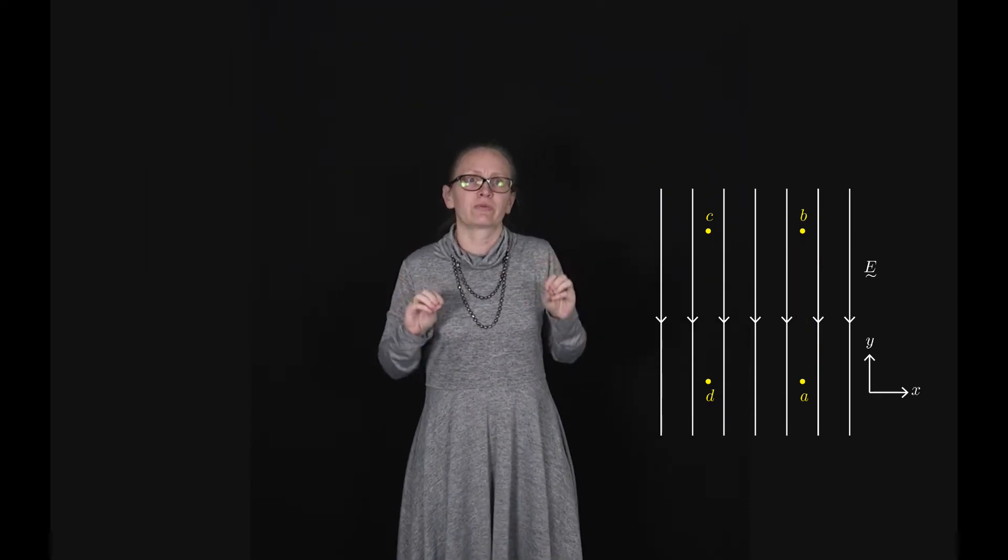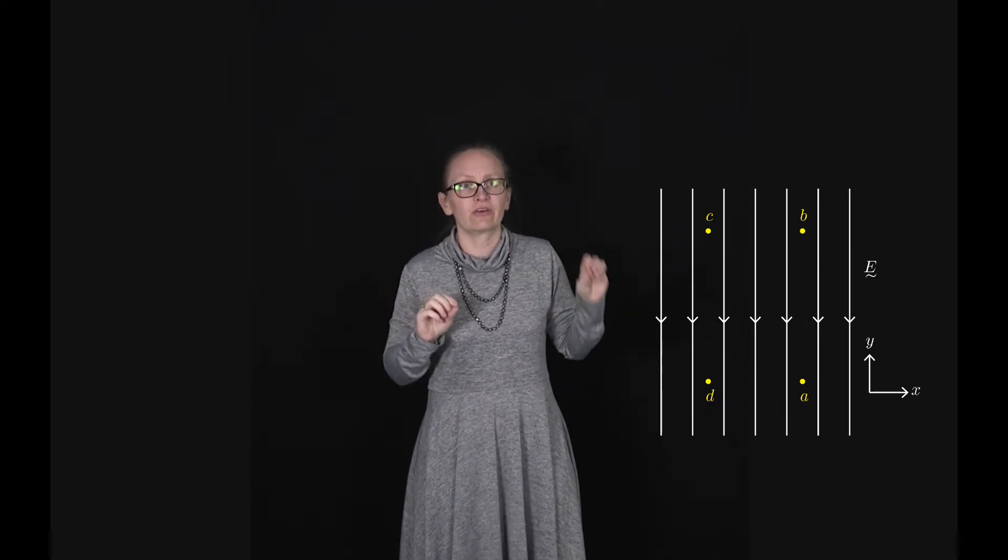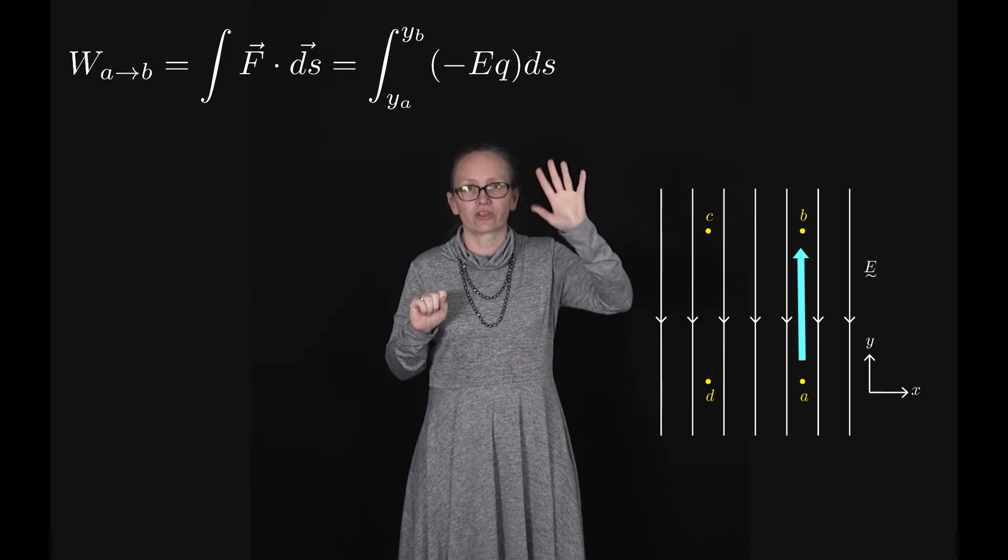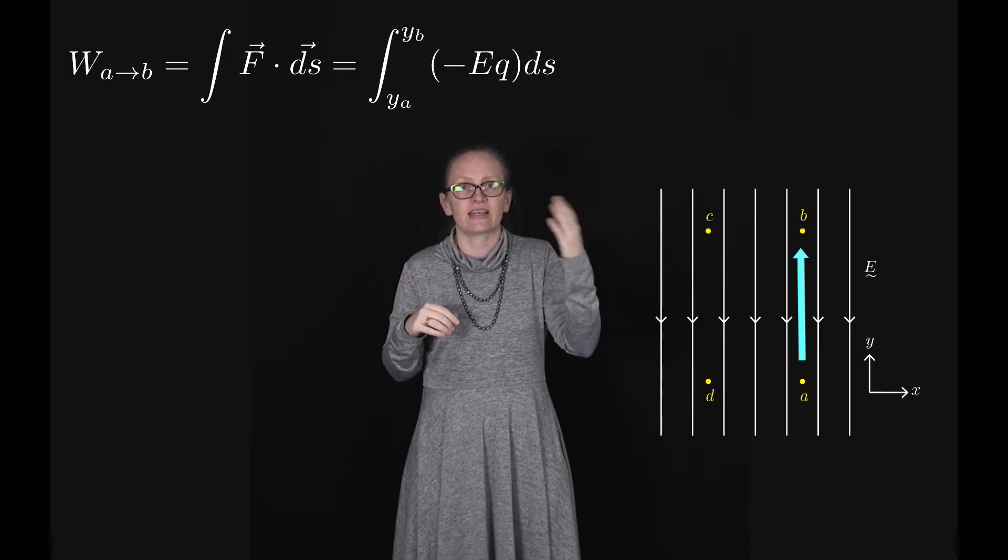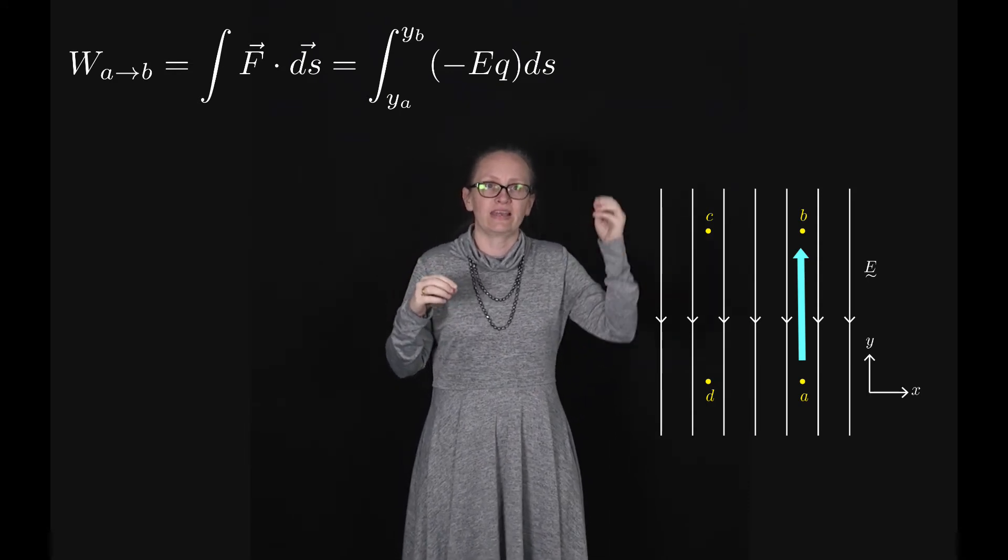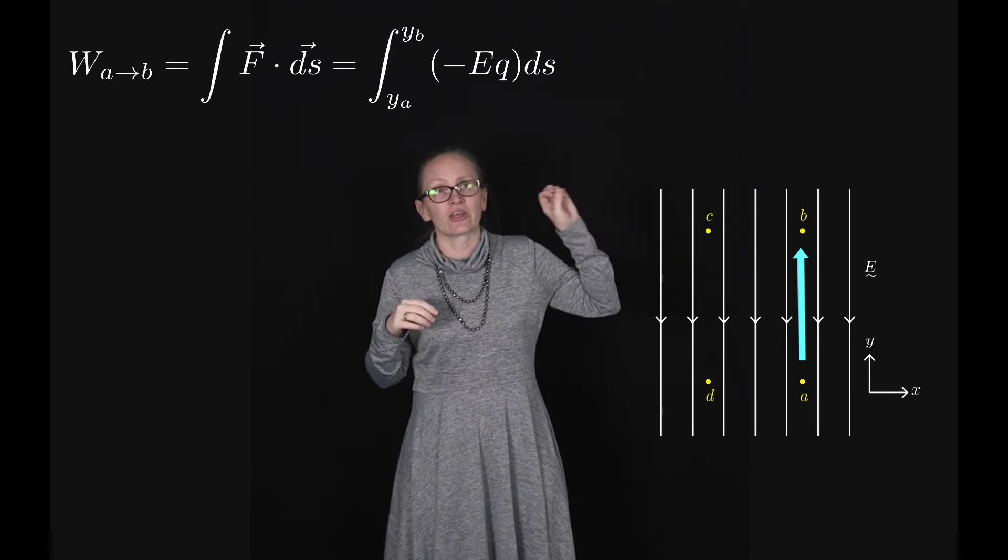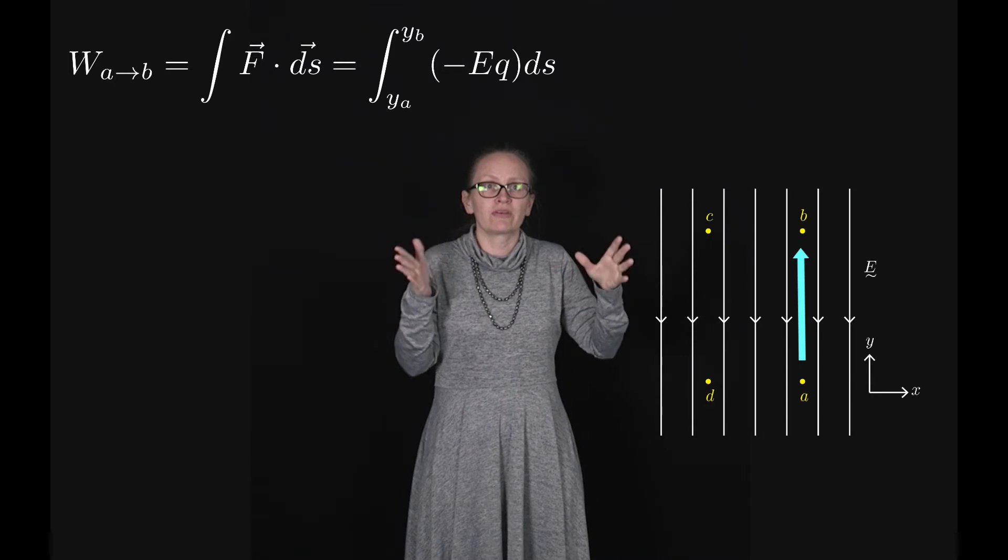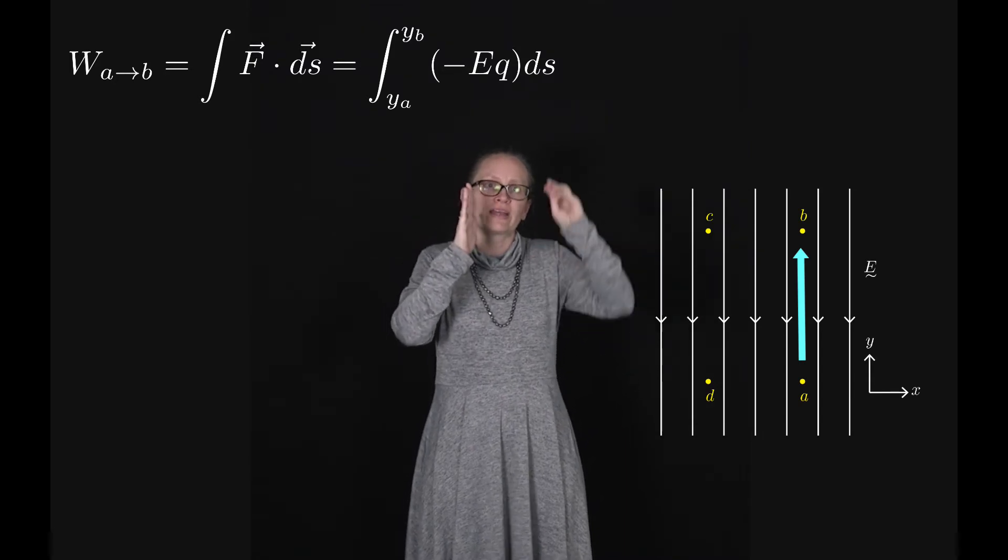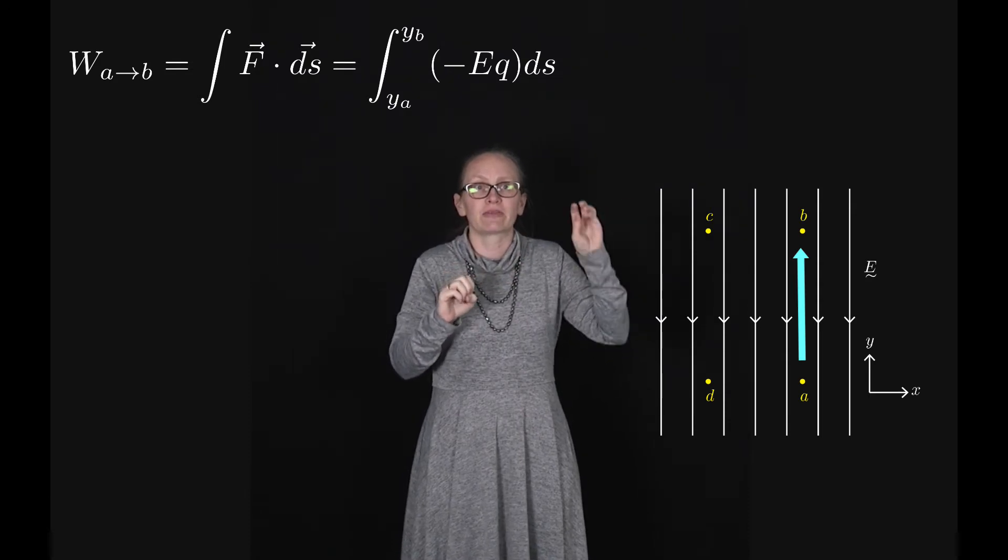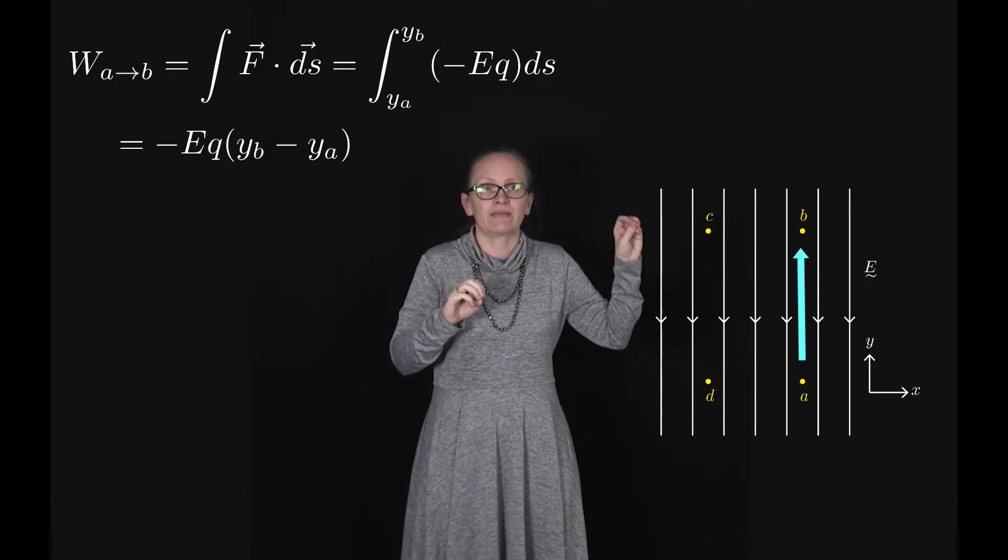Okay so if we want to calculate the work done by the electric field as it moves from A to B we'll need to use our formula that the work done is equal to F dot ds. Now the force in this case is the electrostatic force and the electrostatic force is given by minus Eq where E is the magnitude of the electric field that we've drawn here. So we've got our integral from ya to yb of minus Eq ds. When we do that integral we end up with minus Eq times yb minus ya.